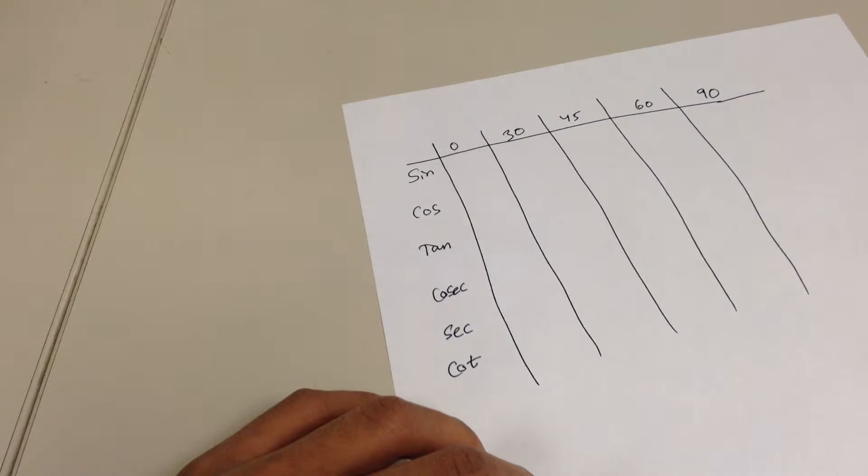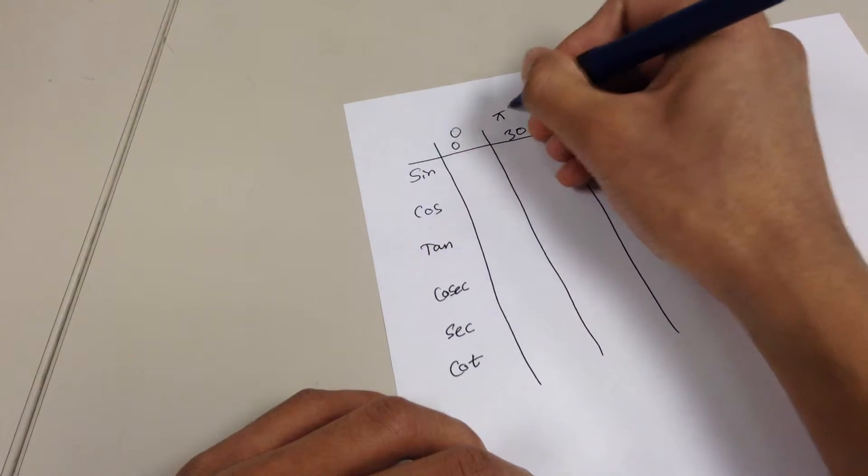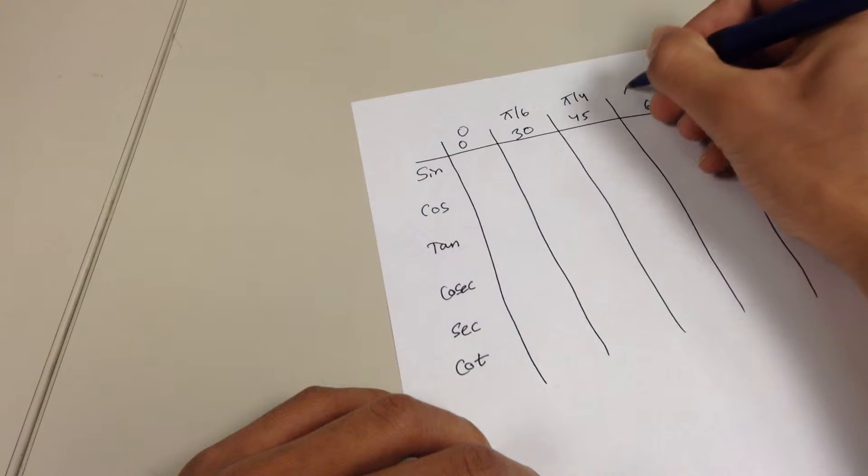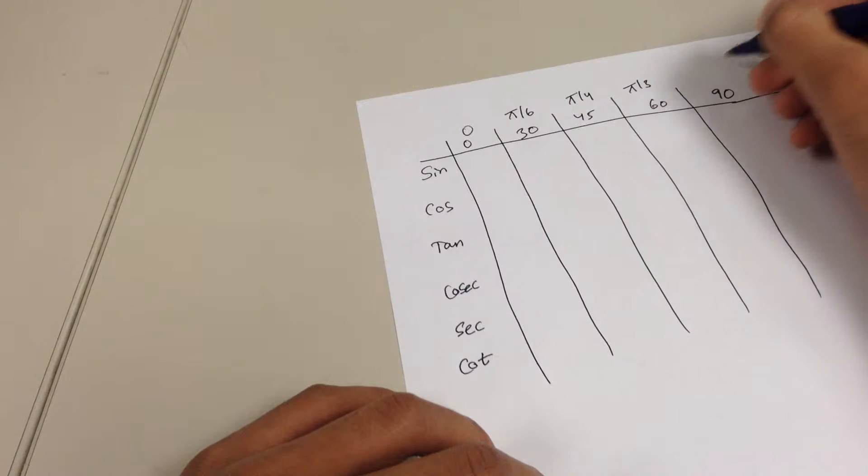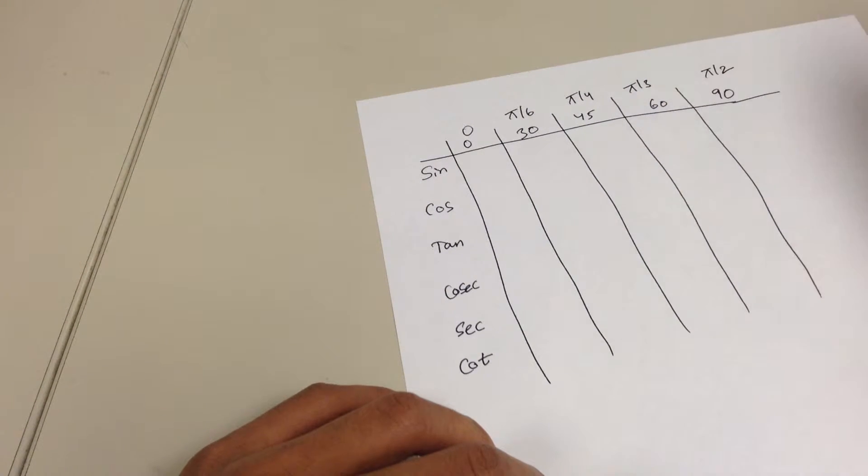And in terms of radians, that'd be 0, pi over 6, pi over 4, pi over 3, and pi over 2.